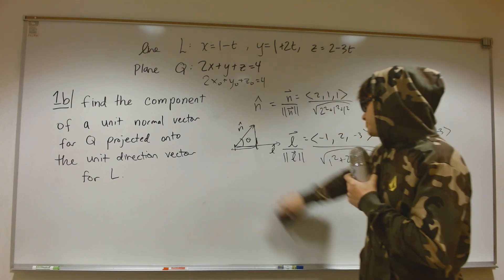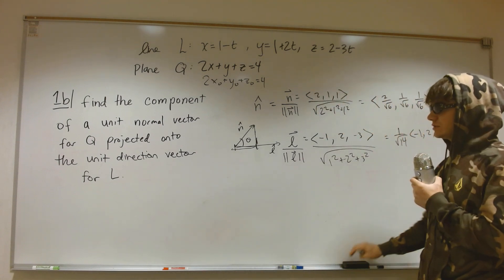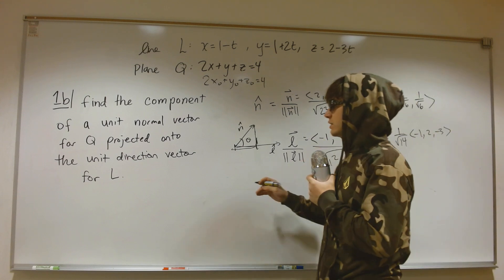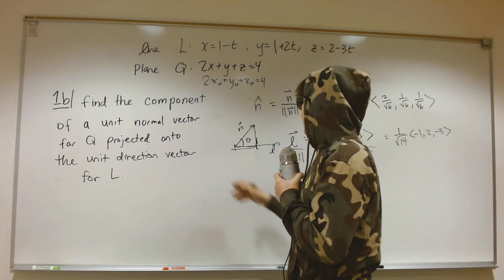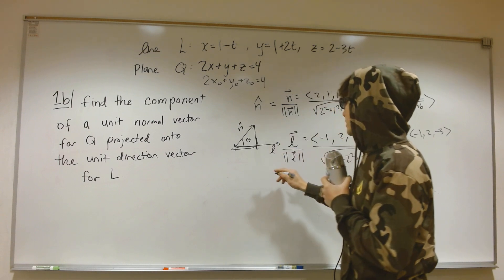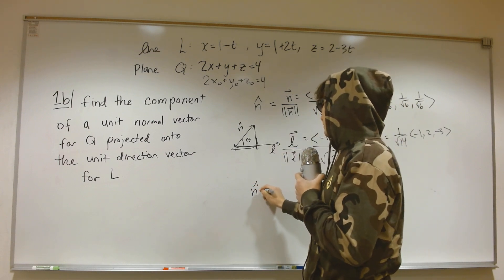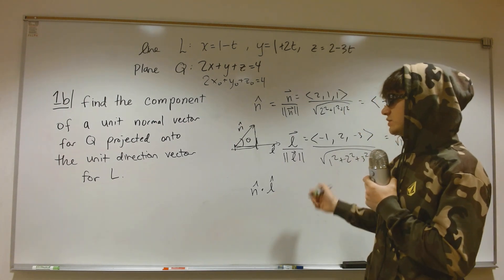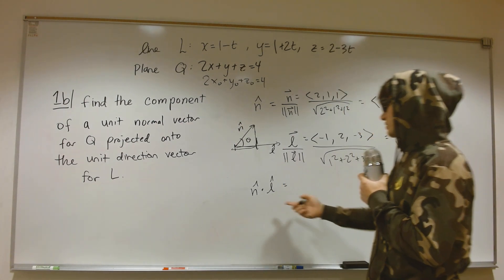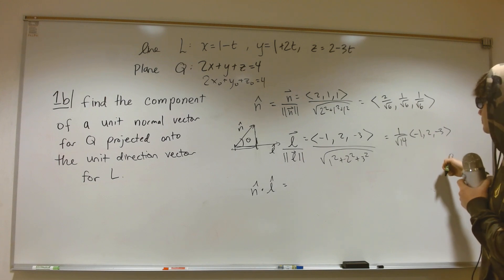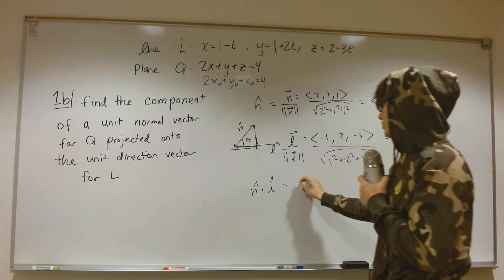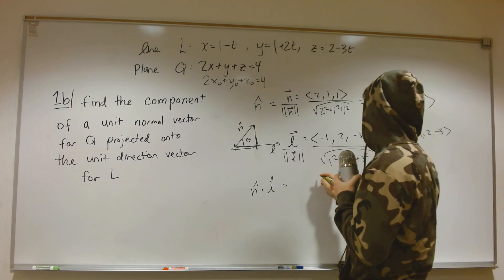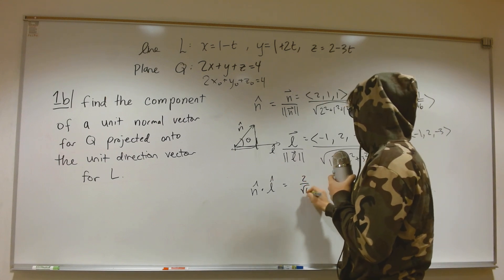Let's wrap this up. The component we want is simply n̂ · L̂. The direction is L̂, so I just need to take the dot product. I'm going to compute (2/√6)(−1/√14) + (1/√6)(2/√14) + (1/√6)(−3/√14).